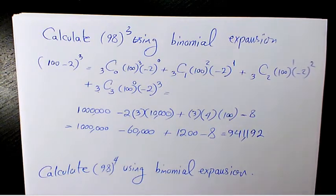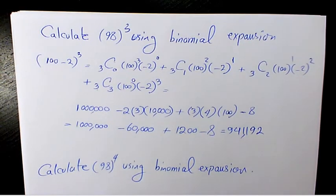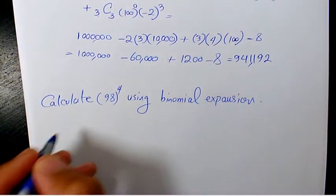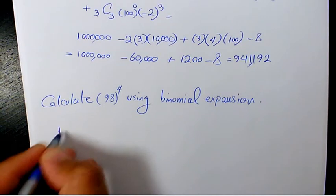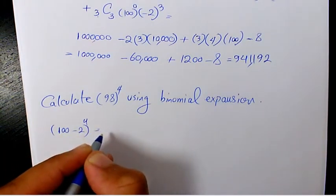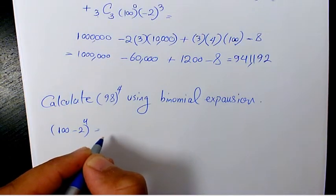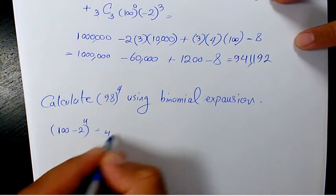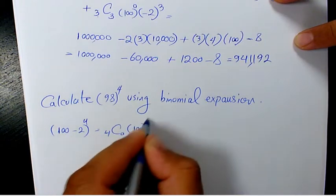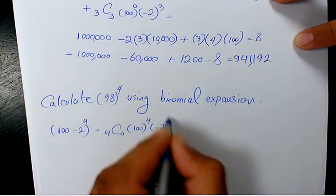Now let's look at 98 to the power of 4. Again, I'm going to write it as 100 minus 2 to the power of 4, then expand it. That's going to be 4C0 times 100 to the power of 4 times negative 2 to the power of 0, plus 4C1 times 100 to the power of 3, and so on through to the last term.